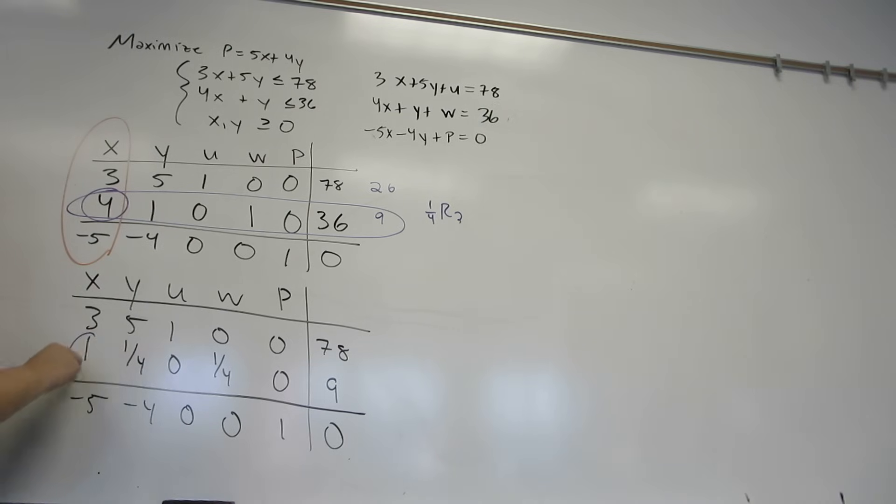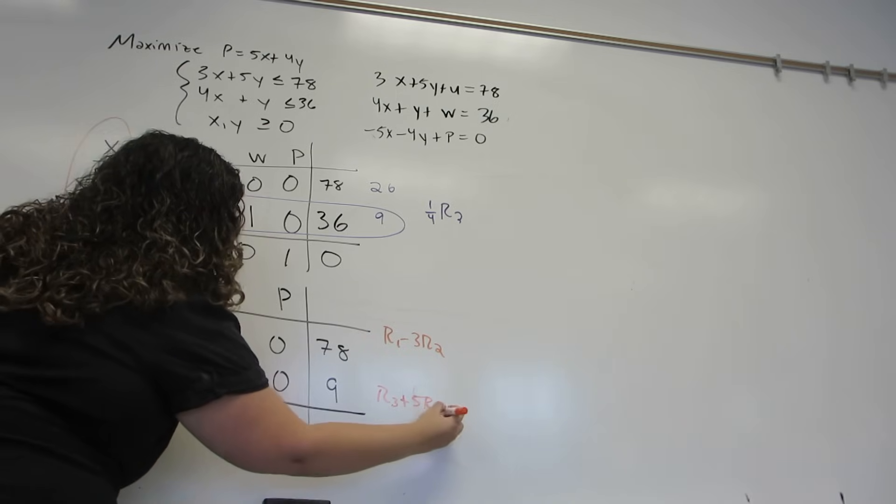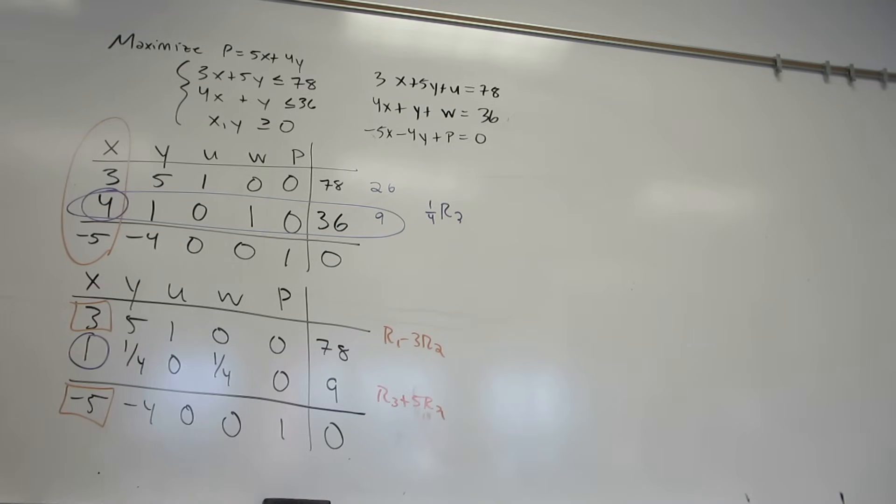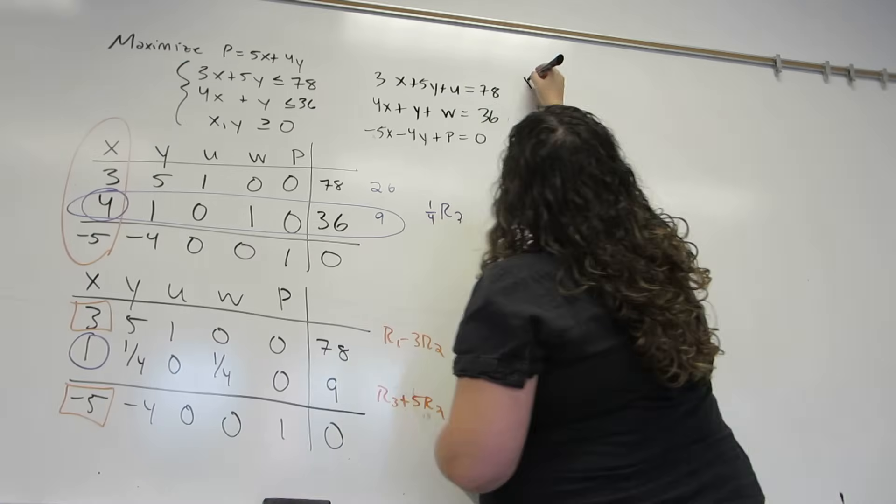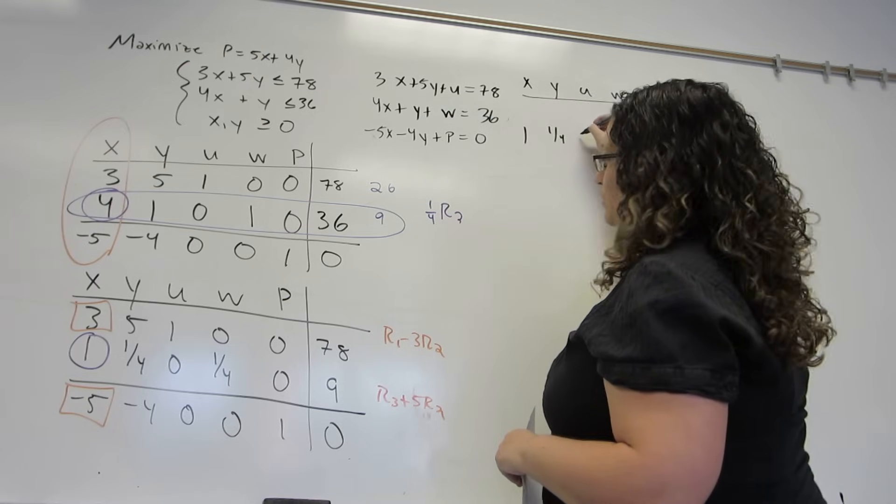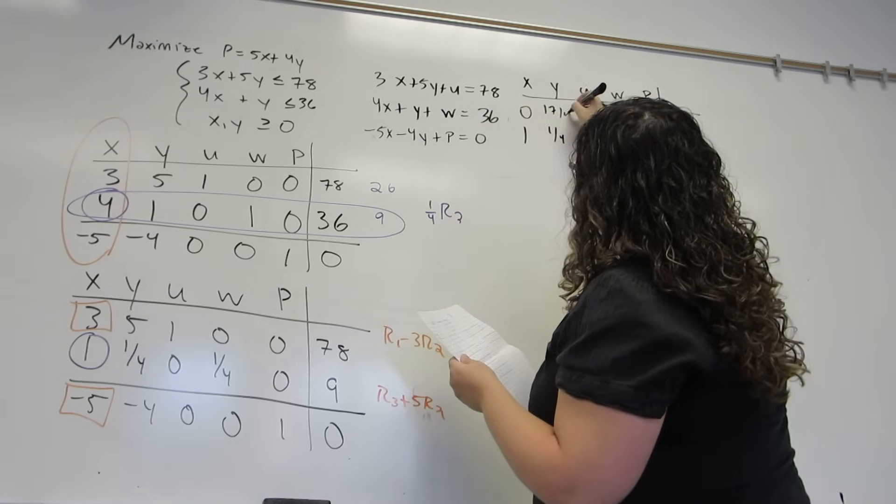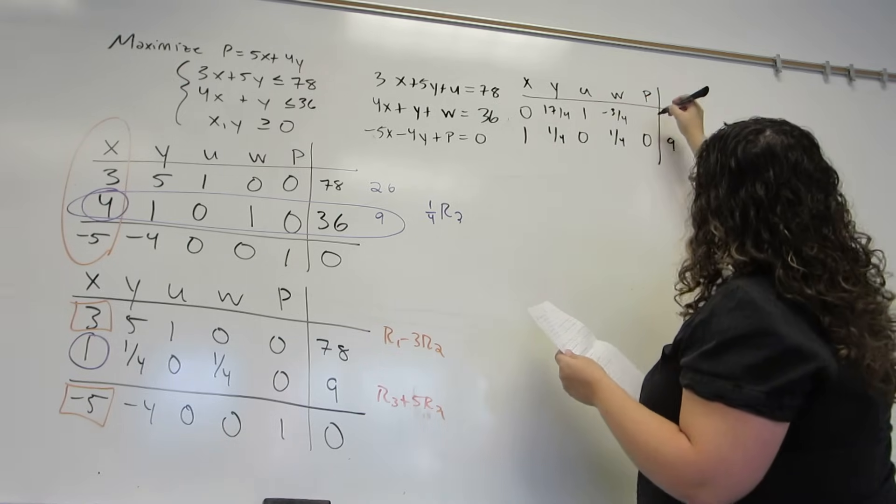Now, this 1 is still our pivot element. And the next step is to use row operations to get 0's above and below it. So to make this a 0, I'm going to do r1 minus 3 r2. Because it's always the row you're fixing minus the number that's there times the row with the pivot element. To fix this row, it's going to be r3 plus 5 r2. So we do these calculations. The second row is not going to change. But the first row will become 0, 17 fourths, 1, minus 3 fourths, 0, 51.